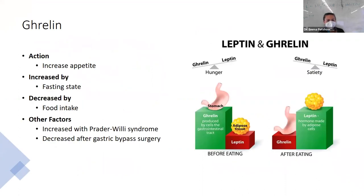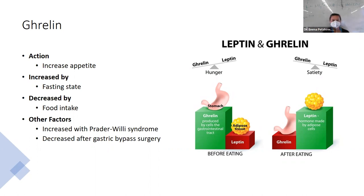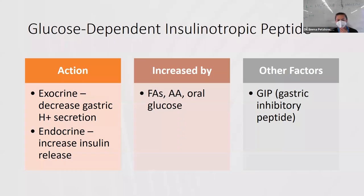Ghrelin: we talked about leptin and ghrelin before. Ghrelin's main action is to increase appetite. It's increased in a fasting state and decreased in a fed state. There are also brain components that can affect it. It's increased with Prader-Willi syndrome and decreased after bypass surgery — because stretch receptors in the smaller stomach fill up faster, keeping the body in a fed state more often and decreasing ghrelin release.